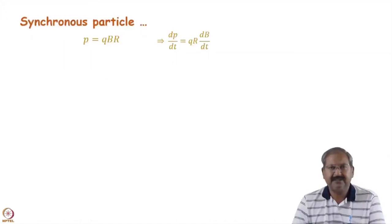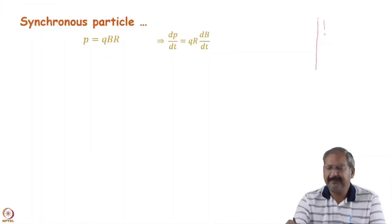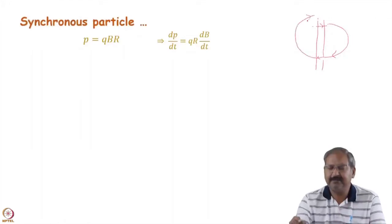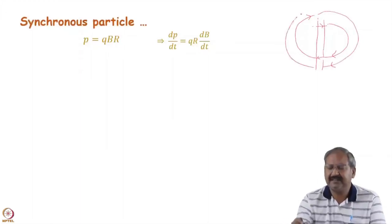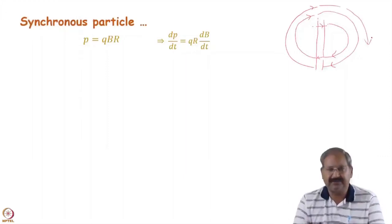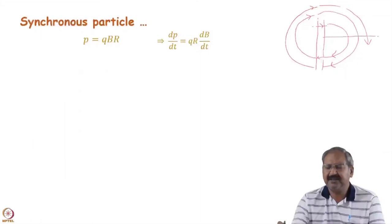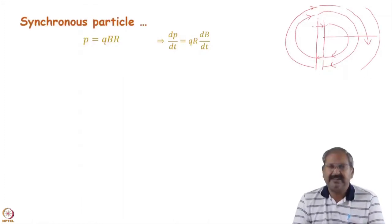The synchrotron operates on the principle that its orbit remains constant. In a cyclotron, as energy increases, the orbit radius increases and the particle makes a spiral path - when the particle crosses the D-shaped electrode it gets energy and makes a larger circular path each time because the guiding magnetic field is constant. The major problems with the cyclotron were relativistic detuning and the magnet size becoming larger and larger, making it very difficult to build.